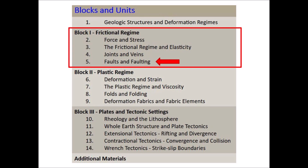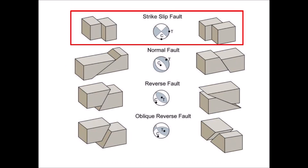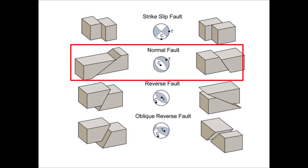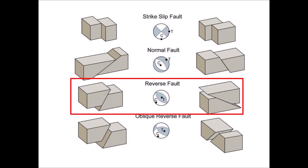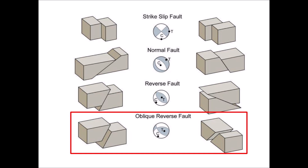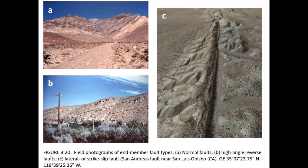The frictional regime describes faults and faulting. In a strike-slip fault, two geological areas slide horizontally along each other. A normal fault occurs when a portion of the terrain slips downward relative to its previous position. A reverse fault occurs when a portion of the terrain slips upward relative to its previous position. An oblique reverse fault occurs when a portion of the terrain slips upward and sideways. The book has pictures of normal faults, reverse faults, and a strike-slip fault represented by the San Andreas Fault in California.